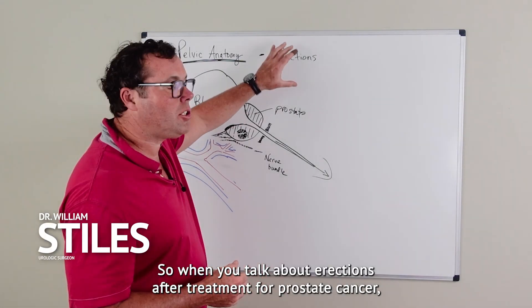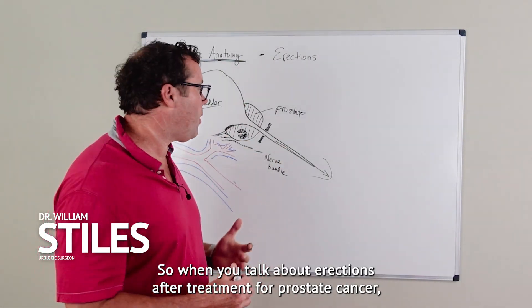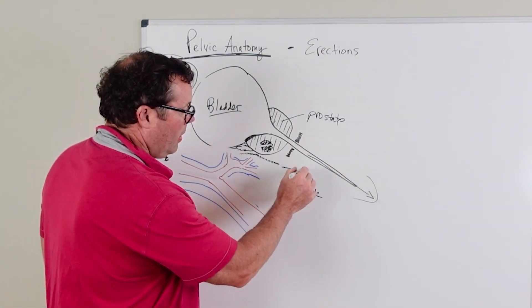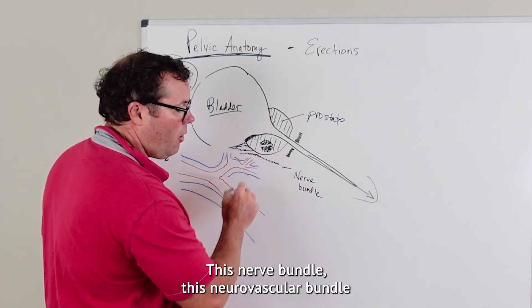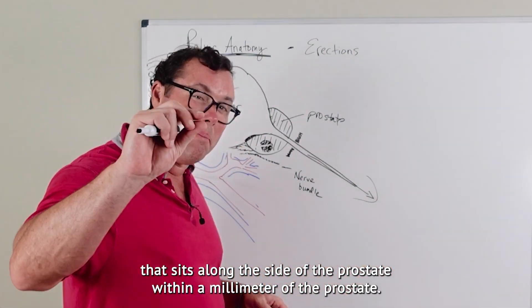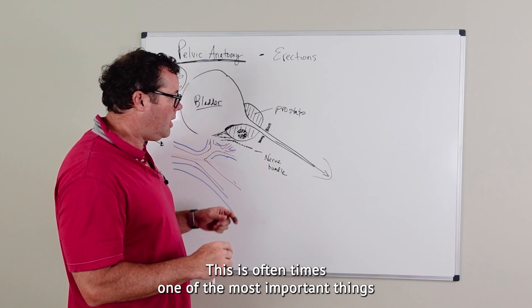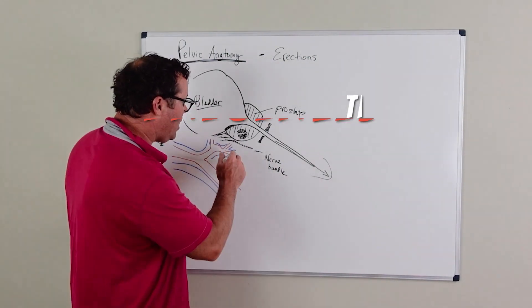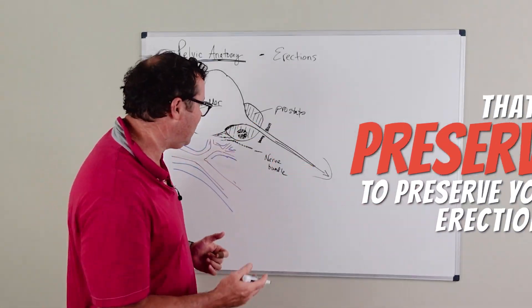When you talk about erections after treatment for prostate cancer, it's important to know about this nerve bundle, the neurovascular bundle that sits along the side of the prostate within a millimeter of the prostate. This is oftentimes one of the most important things that is preserved to preserve your erections.